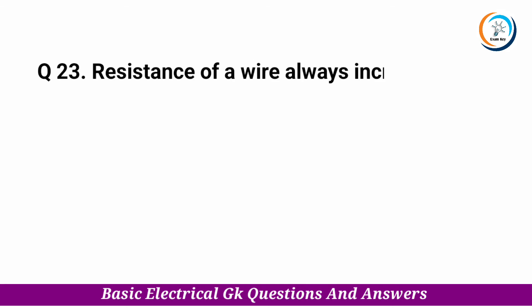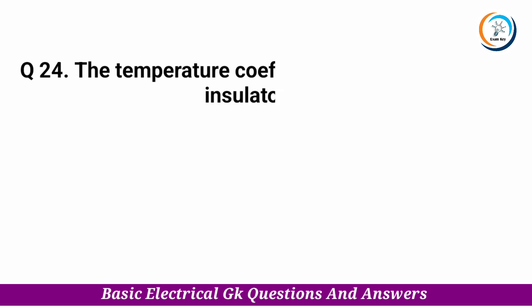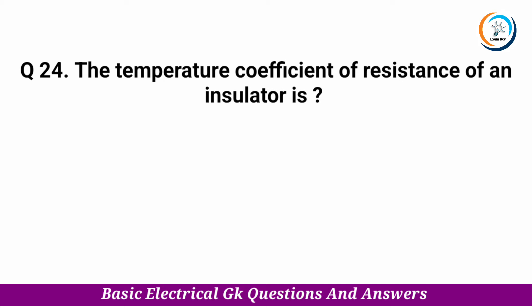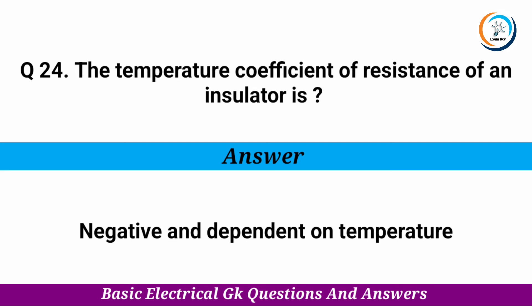Resistance of a wire always increases if — Answer: the number of free electrons available becomes less. The temperature coefficient of resistance of an insulator is — Answer: negative and dependent on temperature.